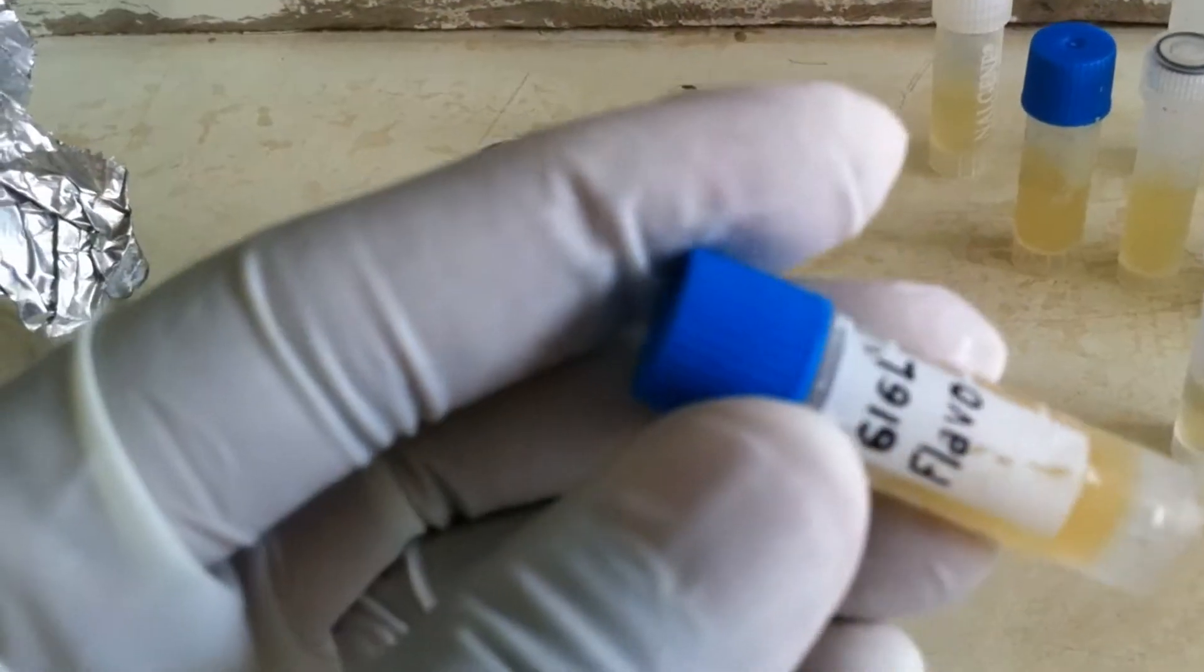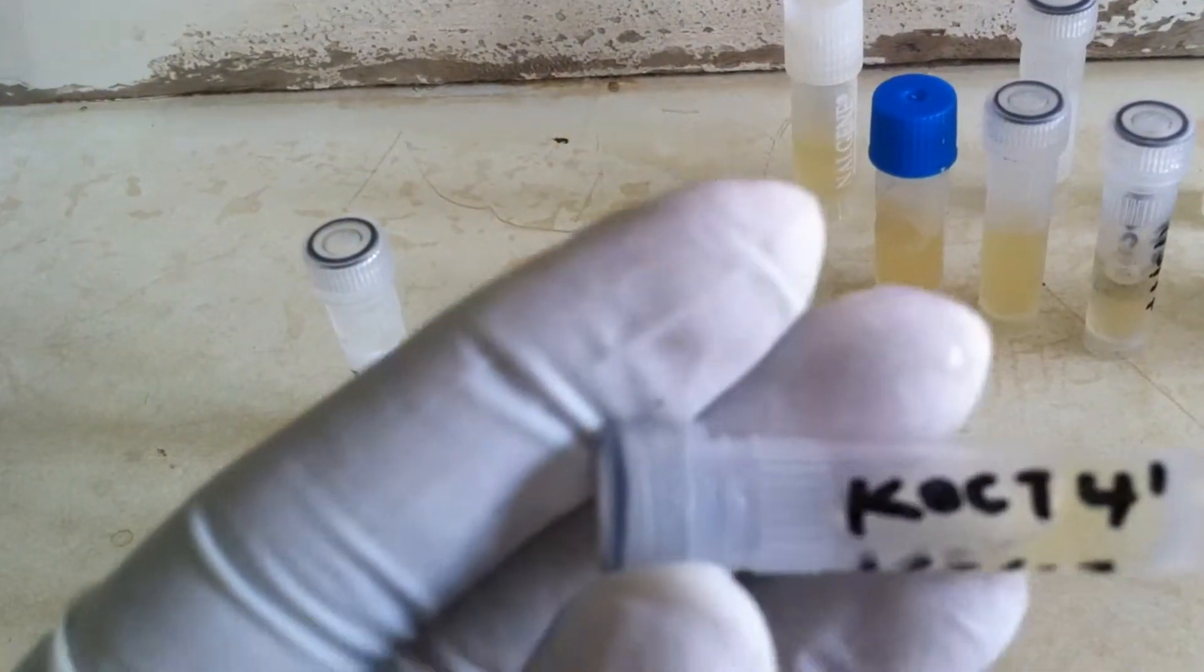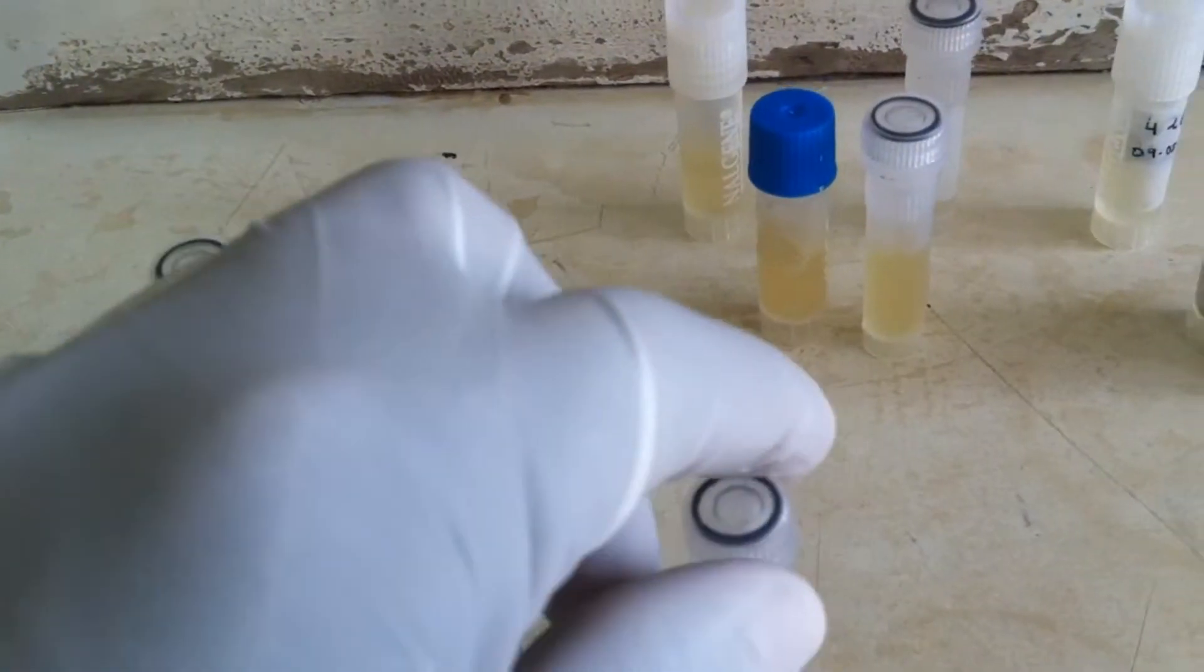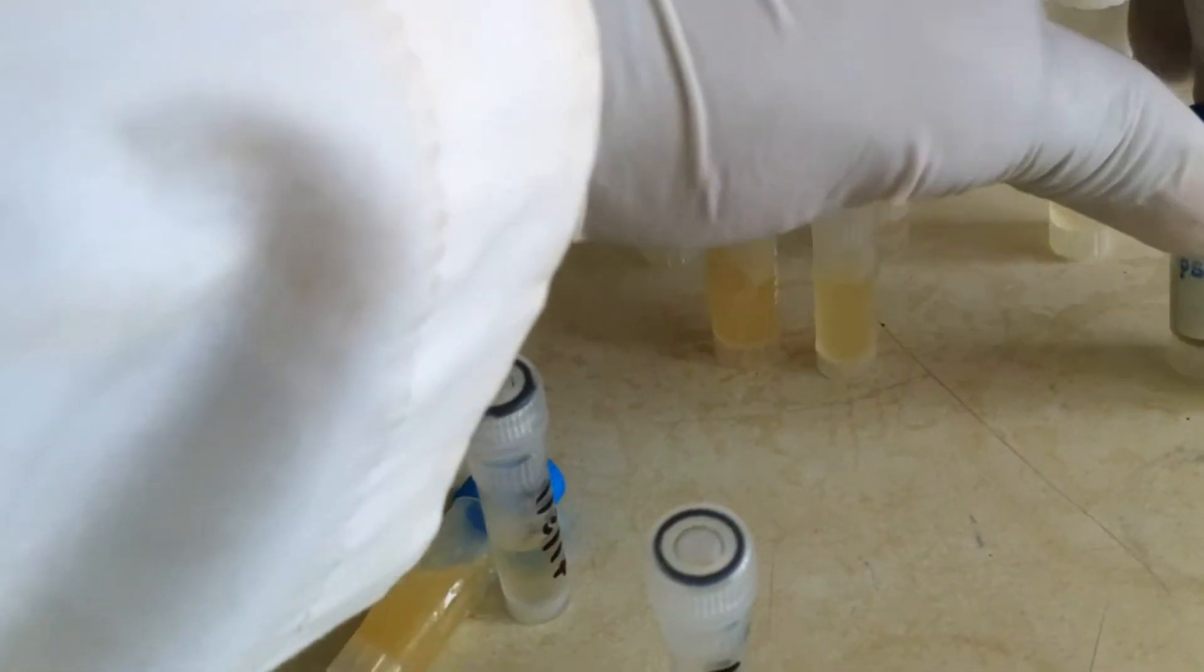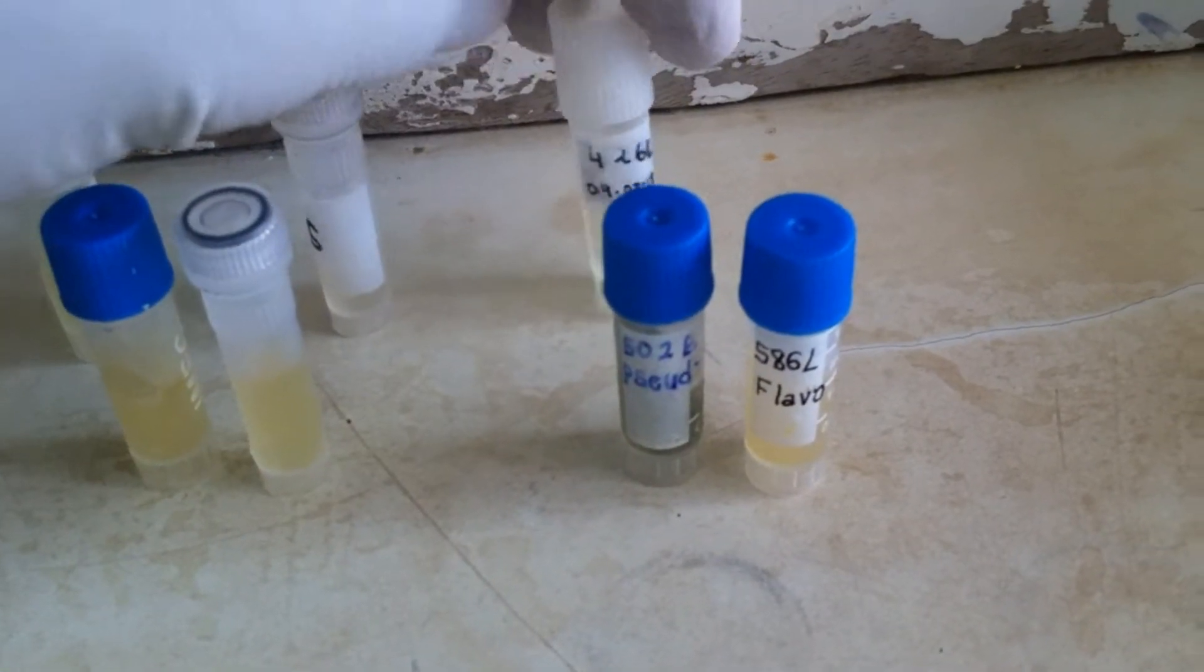Edwardsiella, Pseudomonas, and Aeromonas. Some of these bacteria you will see are just labeled as numbers. We call these laboratory numbers. When you proceed with our work, you will see the real identity of these bacteria. It's used just to identify inside the laboratory.